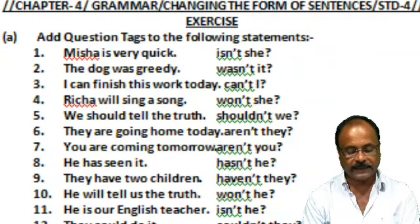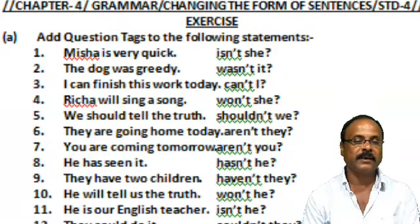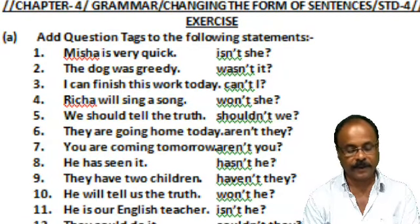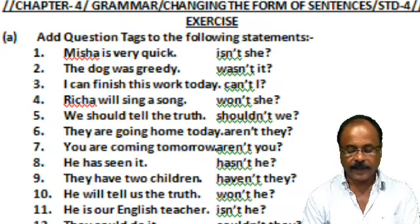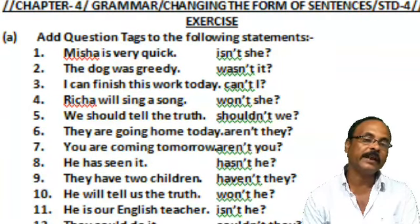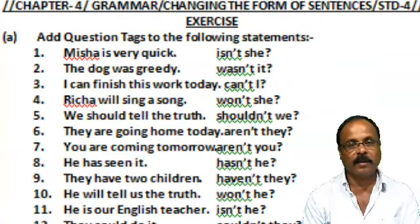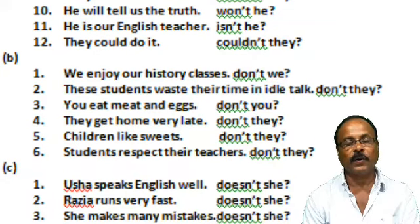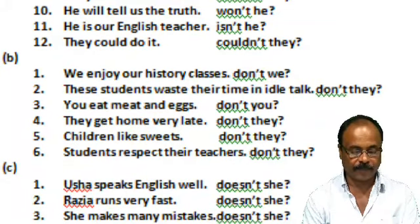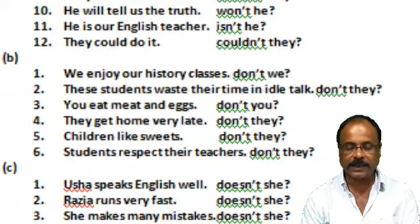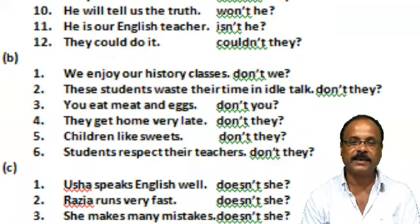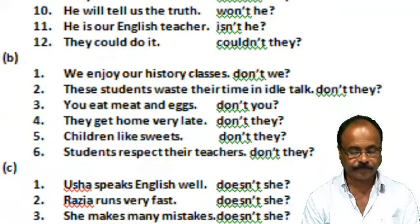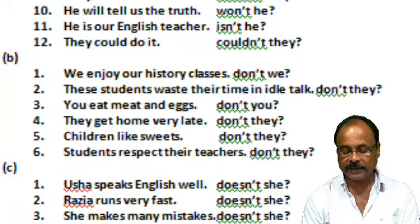Number 5: 'He has seen it.' — 'Hasn't he?' Number 6: 'They have two children.' — 'Haven't they?' Number 7: 'He will tell us the truth.' — 'Won't he?' Number 8: 'He is our English teacher.' — 'Isn't he?' Number 9: 'They could do it.' — 'Couldn't they?'